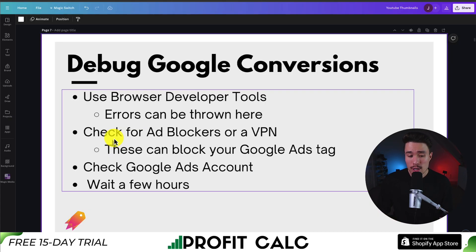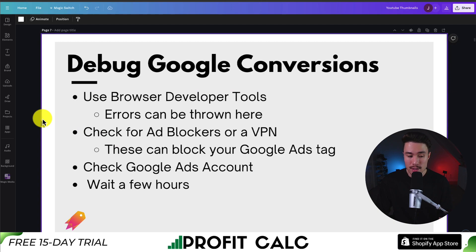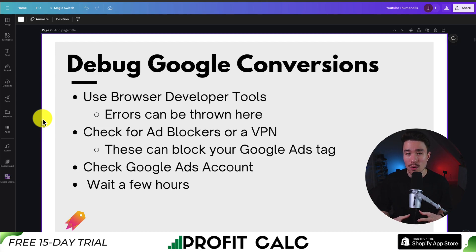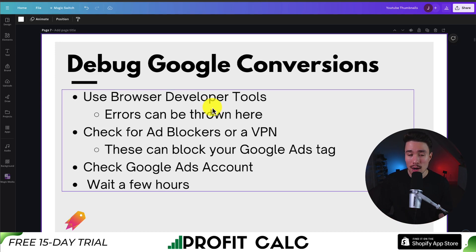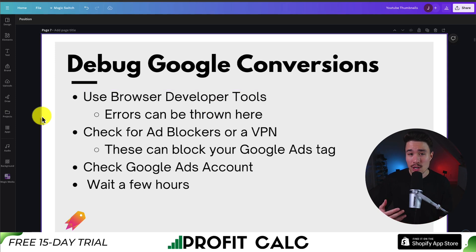The next tip is to check for any ad blockers or VPNs. Switching different browsers helps, but you can also disable these directly. If you're using uBlock or any ad block Chrome extensions, these can block your Google tags from firing, which can impact your testing. Next, log into your Google Ads account, go to the conversions being tracked, and make sure they're not paused or removed, as this can prevent tracking as well.